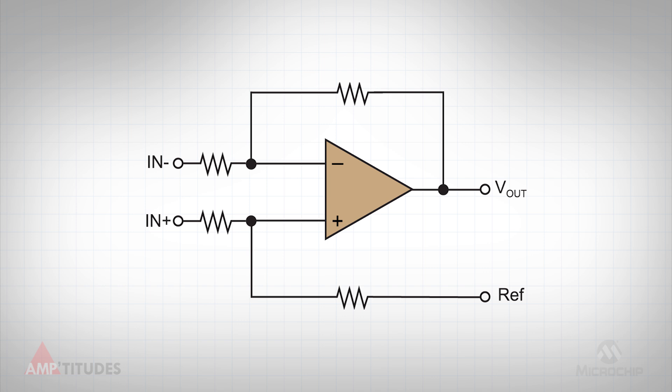However, there are some limitations to this approach. First, the input resistance is relatively low, determined by the external resistors, not to mention that the input currents aren't matched, which will limit the common mode rejection. Speaking of which, the common mode rejection will be limited by how well-matched the resistors are, which leads to subpar performance.